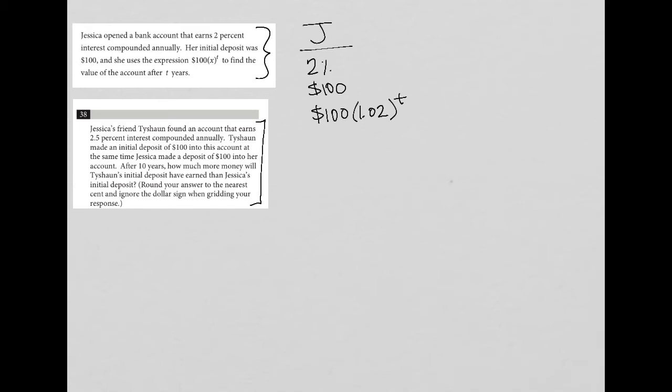It says Jessica's friend Tyshawn. So I'm going to just make a T column. Tyshawn found an account that earns 2.5%, so Tyshawn is making a higher interest rate. Tyshawn made an initial deposit of $100, so he also deposits $100 into his account at the same time Jessica made a deposit of $100 into her account. And now we're told that this T value is 10 years for both of them.